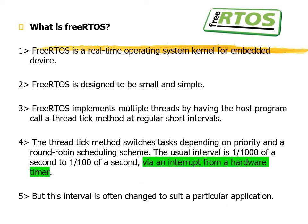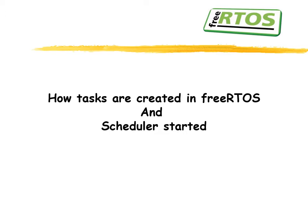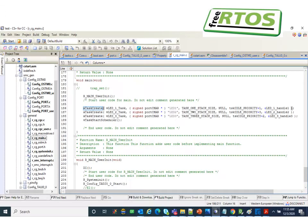The FreeRTOS timer runs at one millisecond and you can configure the time period after which your task has to be triggered. The tick interval can also be changed. The kernel is very portable. Three files are used, but you have to write some architecture-specific assembly functions for porting FreeRTOS to any microcontroller.